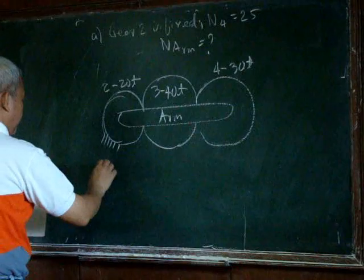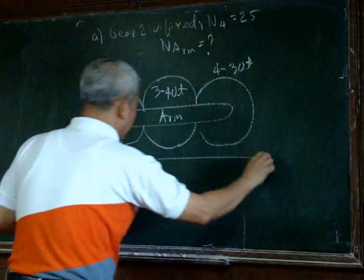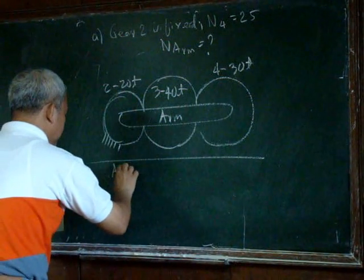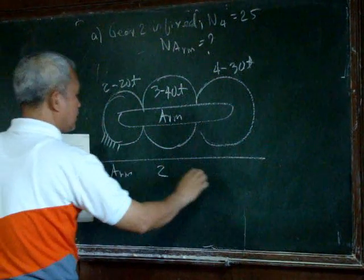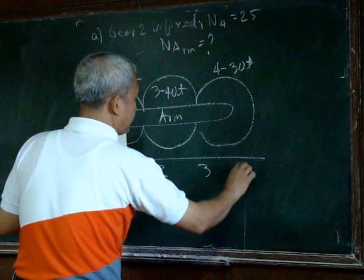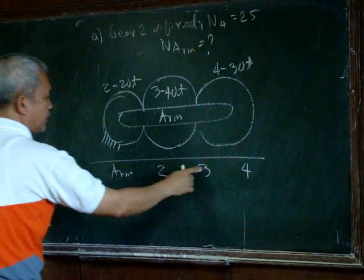So we have to have our table again for the arm. And we have our body 2, our body 3, and our body 4. Gears 2, 3, and 4.